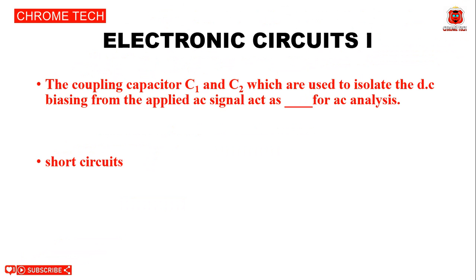Next question: The coupling capacitors C1 and C2, which are used to isolate the DC biasing from the applied AC signal, act as dash for AC analysis. The answer is short circuit.